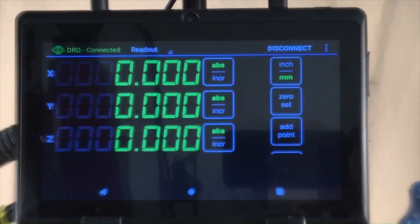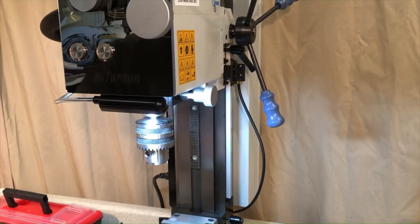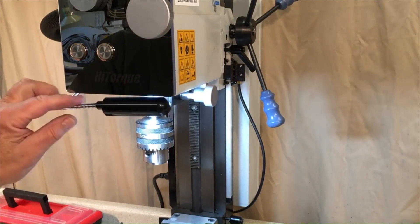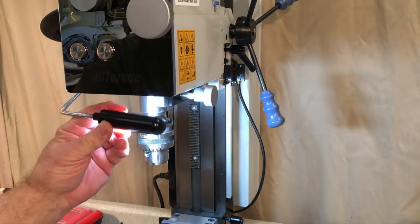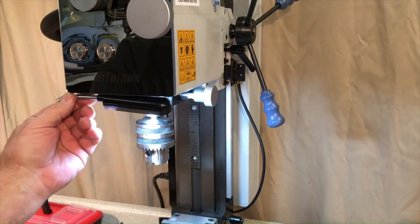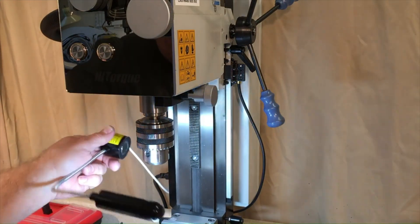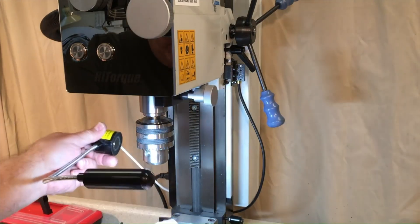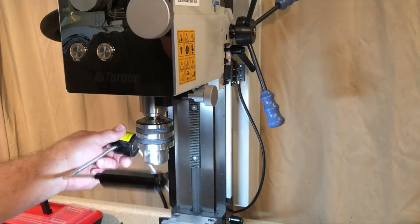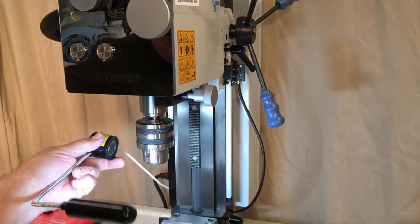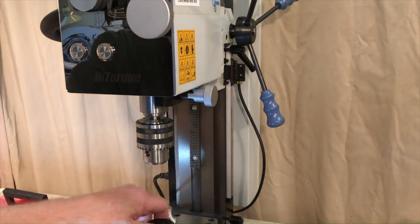Before we get too far along, I did want to comment on a couple of things. One is this LED lamp that I have on here does not come with the mill. I've been using this style of lamp on a lot of the machines in the shop and I really like them. They run cool, they put out a nice bright light, they're low power, and it has a really strong magnet so you can clamp it just about anywhere.